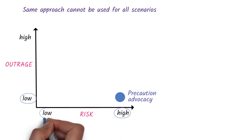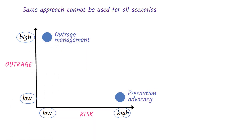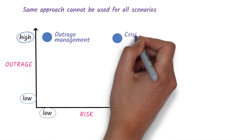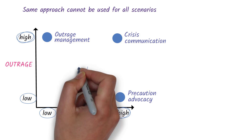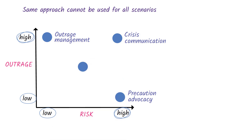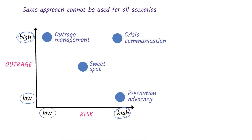When the risk is low but outrage is high, the focus shifts to outrage management — helping people understand the situation, correct misinformation, and reassure them about small or minimal risks. When both the risk and outrage are high, the focus is on crisis communication, supporting people who are upset and guiding them through serious risks. When risk and outrage are both moderate, it represents an ideal state or sweet spot where ongoing dialogue and building trust can be maintained and communication can be proactive.